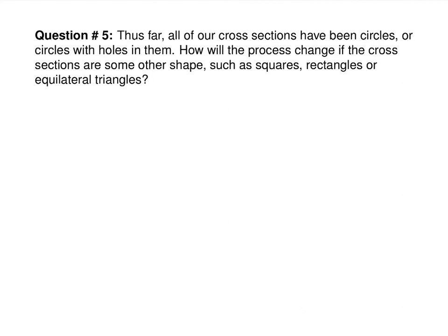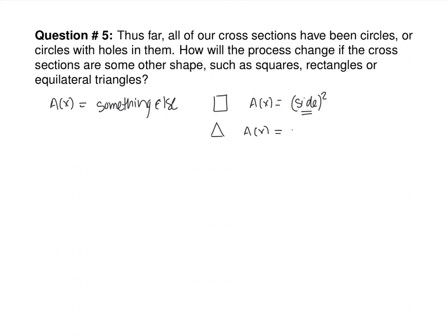Thus far, all cross-sections have been circles or circles with holes. If cross-sections are some other shape — such as squares, rectangles, or equilateral triangles — the area function A(x) changes. For a square cross-section, A = side². For an equilateral triangle, A = (√3/4) · side². For a rectangle, some relationship between length and width must be specified.